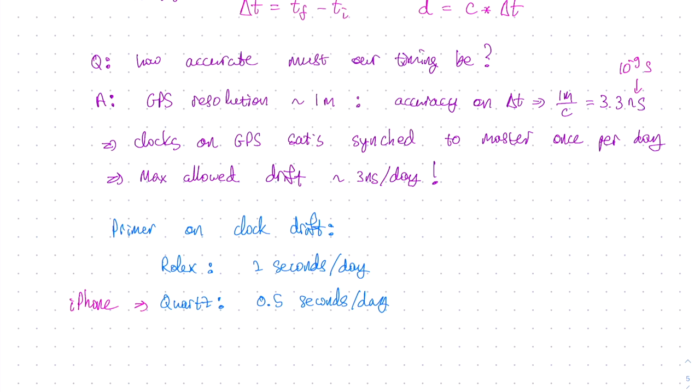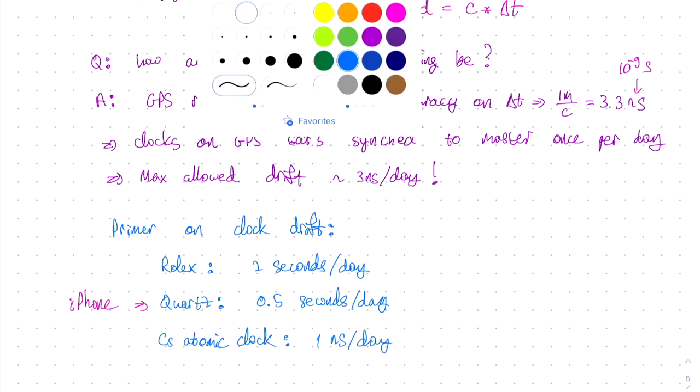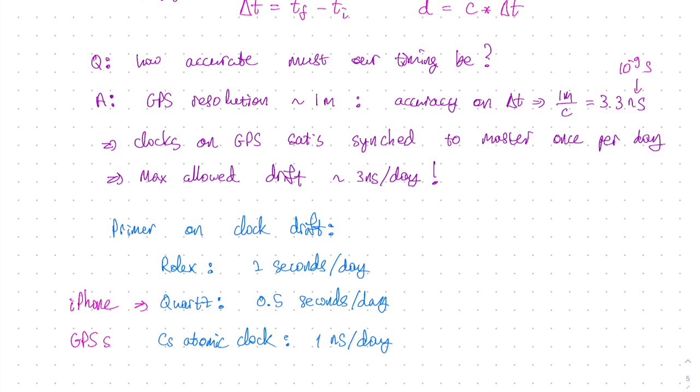Now a caesium atomic clock, which measures oscillations of caesium atoms, is way more precise. This one has a drift rate of about 1 nanosecond per day. And this is indeed what is used on GPS satellites. Comparing the caesium atomic clock to a conventional quartz clock, we get an improvement of about 1 billion times.